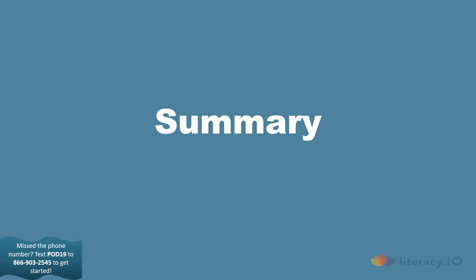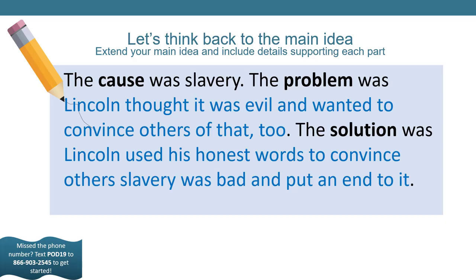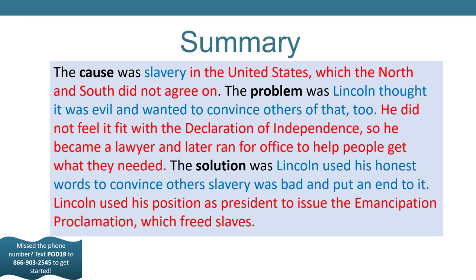Great work, detectives. Now let's extend our main idea to write a summary of the passage. We'll think back to our main idea: the cause was slavery; the problem was Lincoln thought it was evil and wanted to convince others of that too; the solution was Lincoln used his honest words to convince others slavery was bad and put an end to it. Pause your video and talk with your adult partner about details you could add to the cause, the problem, and the solution. Here's my summary: The cause was slavery in the United States, which the North and South did not agree on. The problem was that Lincoln thought it was evil and wanted to convince others of that too — he became a lawyer and later ran for office. The solution was Lincoln used his honest words to convince others slavery was bad, and used his position as president to issue the Emancipation Proclamation, which freed slaves.